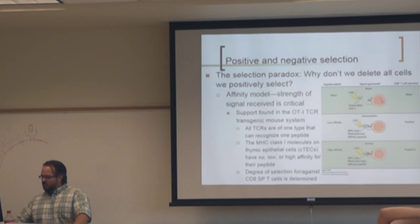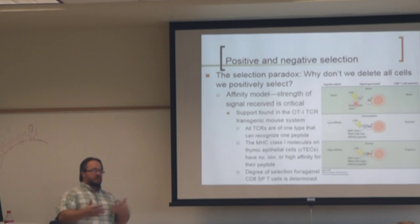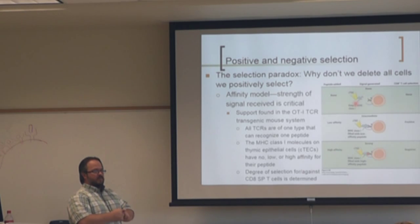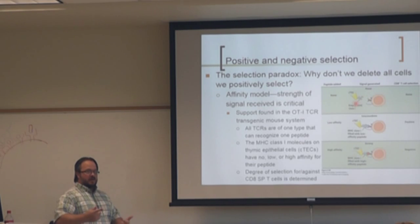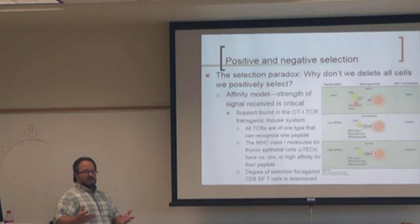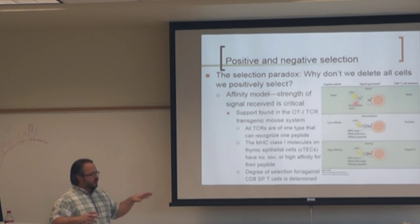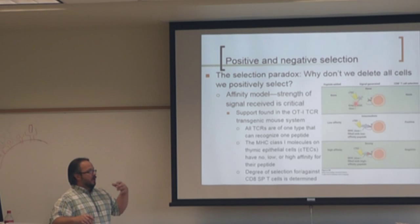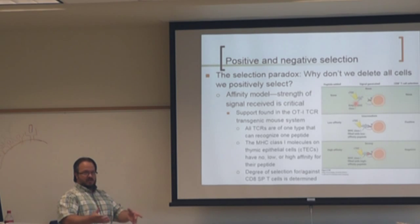They used two peptides — both derived from ovalbumin, differing by only one amino acid — one that bound with high affinity to the T cell receptor and one that bound with low affinity. That one amino acid difference changes the shape just enough to create low versus high specificity. They showed that T cells exposed to the high affinity peptide die, while those exposed to the low affinity peptide lived. They could also dilute out the high affinity peptide to very low concentrations and those cells would still survive, showing that concentration — and therefore avidity — matters.